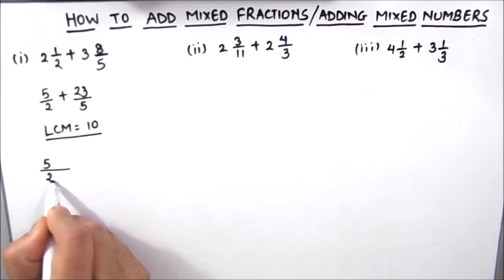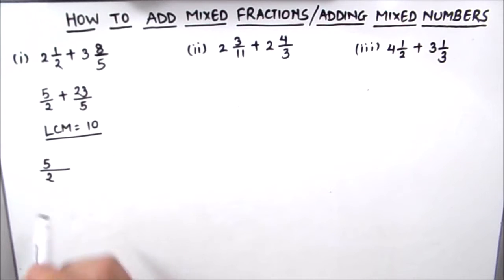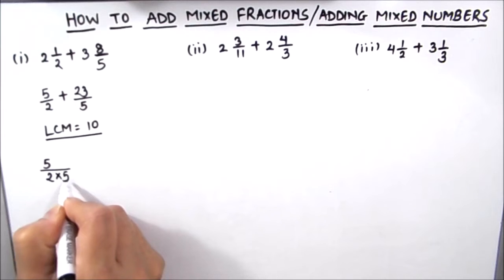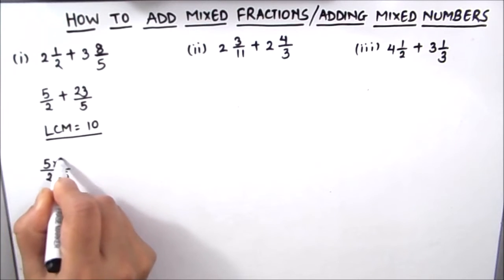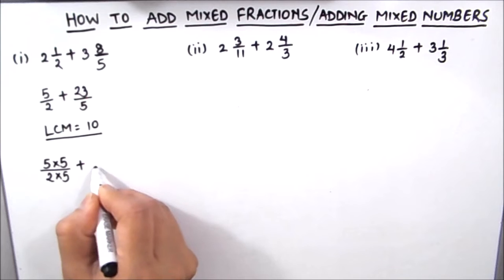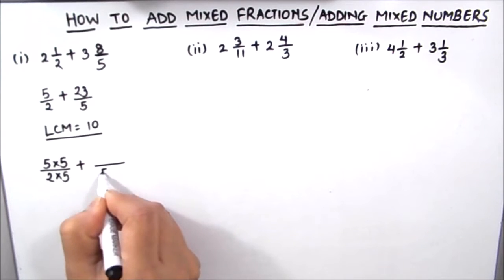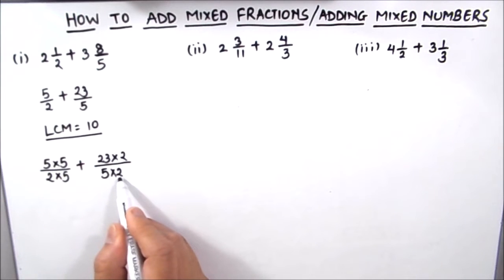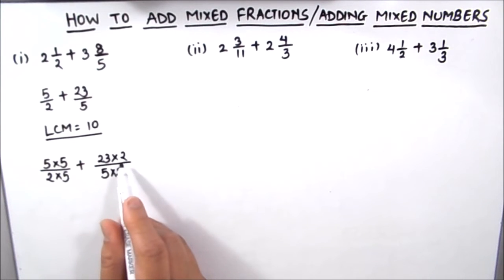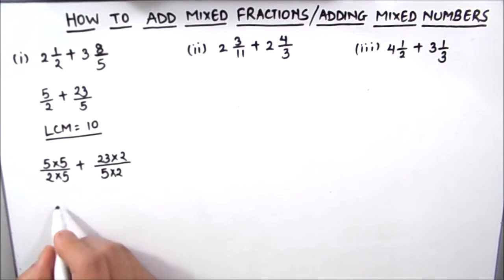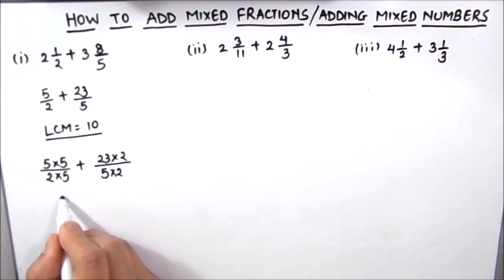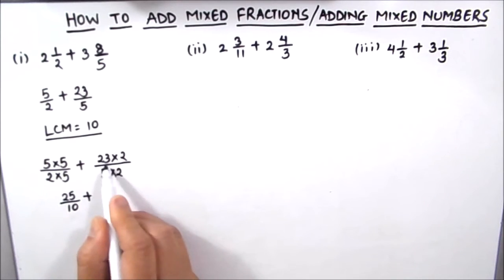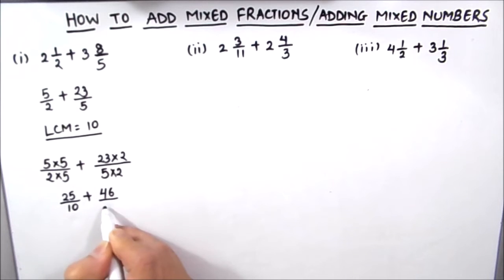Let's make the denominators of the two fractions equal to 10. For 5/2, to make 2 equal to 10 we have to multiply it by 5, and as we are multiplying the denominator by 5 we have to multiply the numerator 5 by 5 as well. Similarly, for 23/5, to make 5 equal to 10 we have to multiply it by 2, so we multiply the numerator 23 by 2. So the first fraction is now 5 times 5 which is 25 divided by 10, plus 23 times 2 is 46 divided by 10.